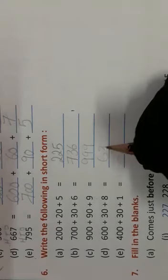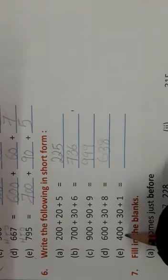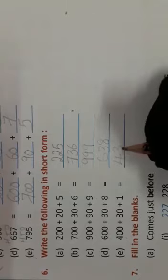Six hundred plus 30 plus 8, it's 638. Four hundred plus 30 plus 1, it's 431. Thirty plus 1 is equal to 31. I hope everybody is understanding very well.